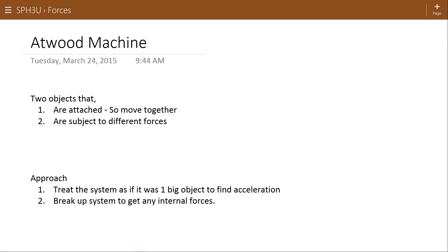In this video we're going to look at objects that are attached to each other by a string, or maybe they're resting right next to one another. As a result they move together and accelerate together one way or the other. But because they're separate objects they might have different forces acting on them. This could be like a train where you consider the train cars separate from the train itself, or two blocks pushing against each other across the top of a table.